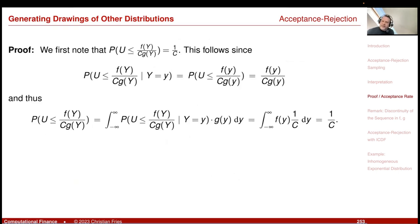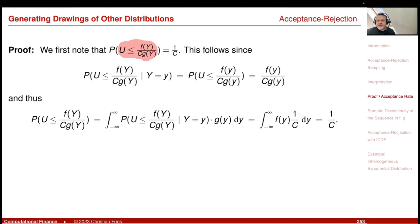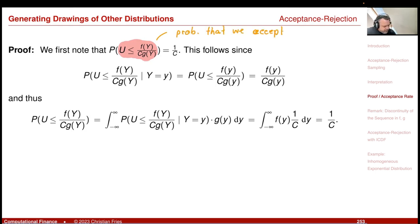Let's prove the method, since the proof provides further insight. We first note that the probability that u ≤ f(Y) / (c·g(Y)) — that is, the probability that our point is accepted — equals 1 divided by c.